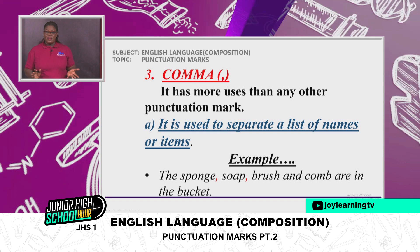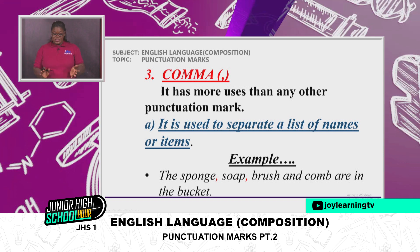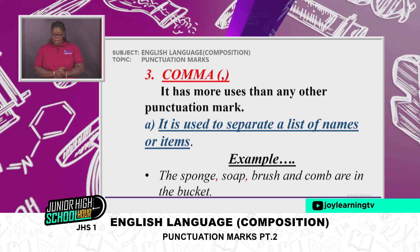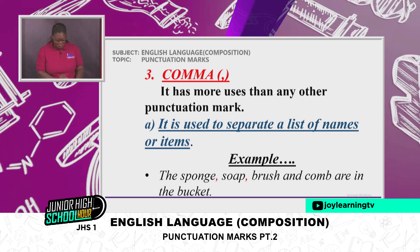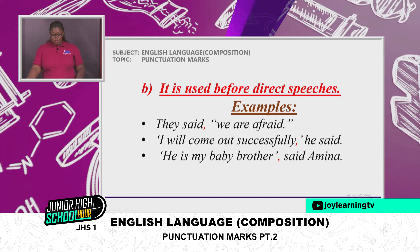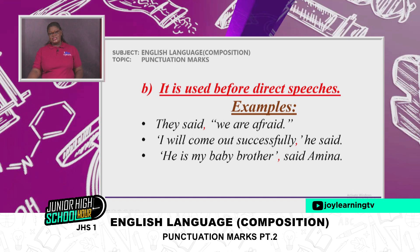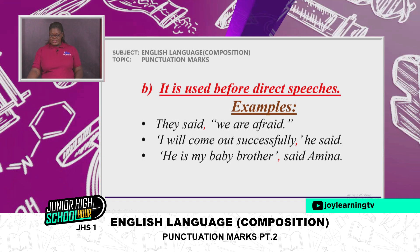Then we move on to the comma. It has more uses than any other punctuation mark. First, it is used to separate a list of names or items. Example: 'The sponge, soap, brush, and comb are in the bucket.' Again, it is used before direct speeches. Examples: 'They said, "We are afraid."' 'I will come out successfully, he said.' 'He is my baby brother, said Amina.'